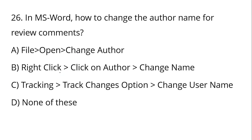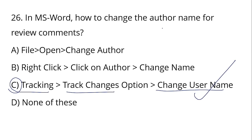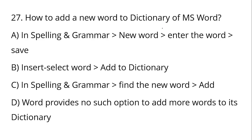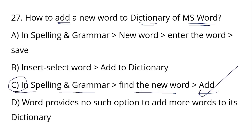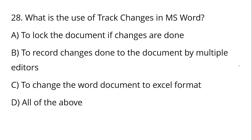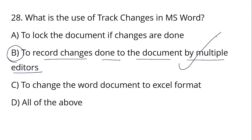In MS Word, Option C shows how to change the author name for review comments. To add a new word to the dictionary in MS Word, Option C is the correct answer. Track Changes in MS Word is used to record changes done to the document by multiple editors — Option B is the correct answer.